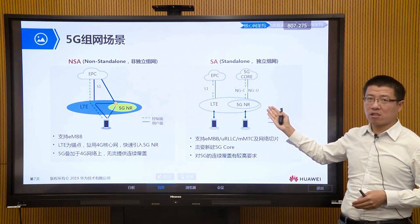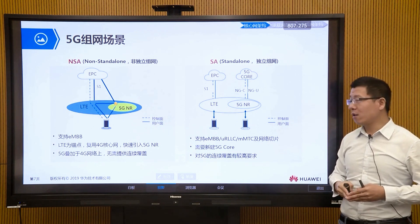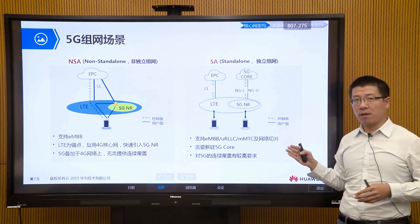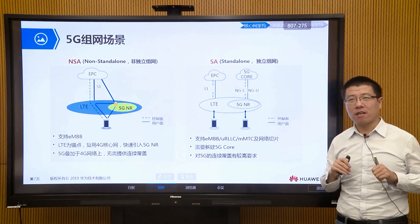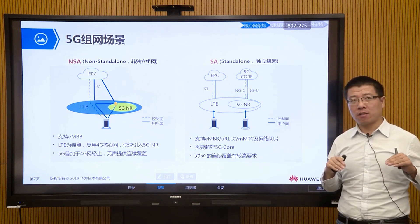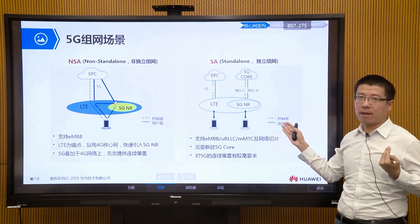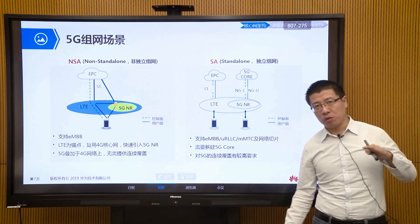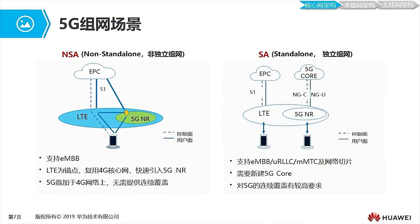So this is a balance between effectiveness and initial investment. If we emphasize business experience more, we need more investment upfront. On the other hand, if we want to save initial investment and ensure business robustness, we can choose the NSA scenario. These two scenarios are complementary, but the SA scenario is our target network because it supports slicing to meet the needs of vertical industries.